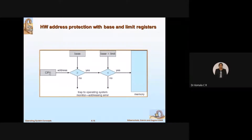The CPU generates a logical address, which is checked against the base and limit registers. If the address is greater than or equal to the base, we proceed to the next step; otherwise, a trap to the operating system monitor generates an addressing error. Then we check whether the address is less than or equal to base plus limit — if yes, the logical address is successfully mapped to the physical address.